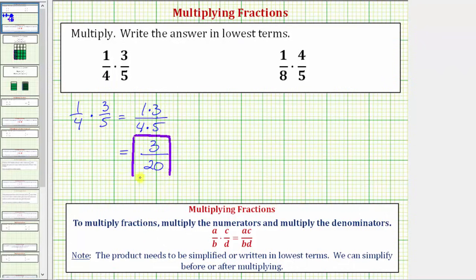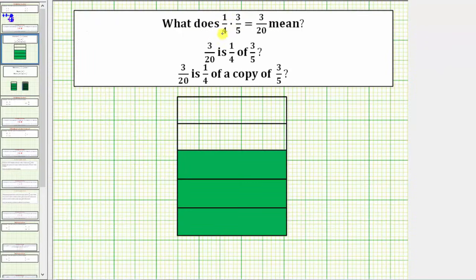And before we go to our second example though, let's discuss the meaning of this product. So the question is, what does 1/4 times 3/5 equals 3/20 mean? Well it means that 3/20 is 1/4 of 3/5, or we can say 3/20 is 1/4 of a copy of 3/5.